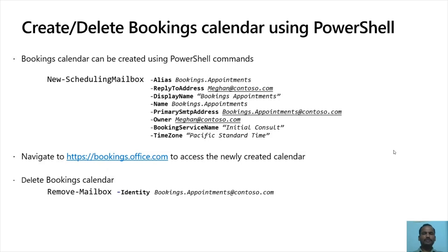For scaled scenarios or where only limited users have permissions to create Bookings mailboxes, you can create the mailboxes using PowerShell commands. Run the New-SchedulingMailbox command with relevant parameters like the display name of the service, the primary address, the owner of the mailbox, and the time zone. This helps you create a mailbox programmatically with default settings. Once created, you can hand it over to Bookings admins to configure it from bookings.office.com. The Bookings admin is the user assigned as owner in the New-SchedulingMailbox command or a staff member added from bookings.office.com. When a Bookings mailbox is no longer needed, you can delete it like any other Exchange mailbox using PowerShell commands or by visiting the admin center portal.